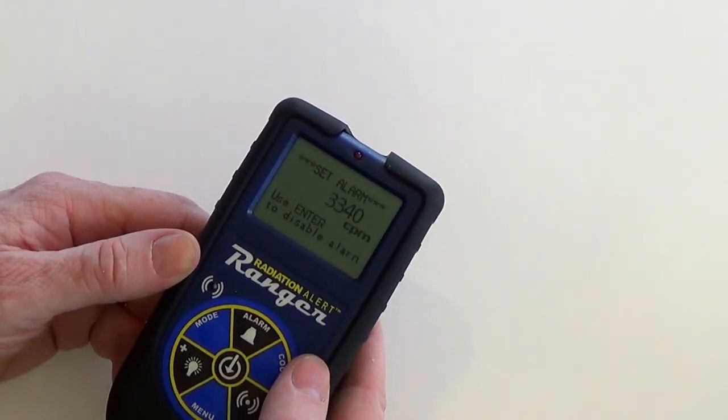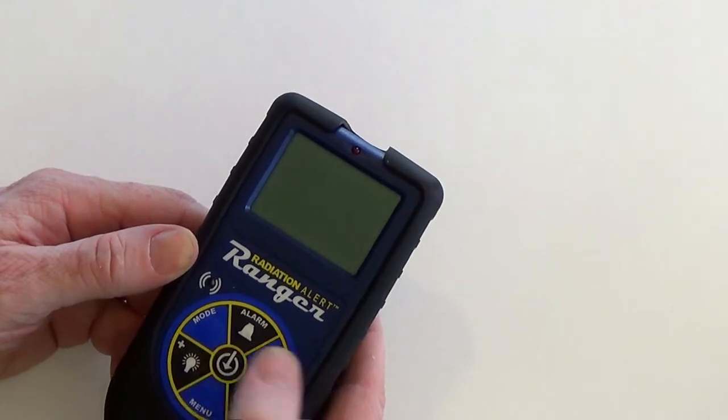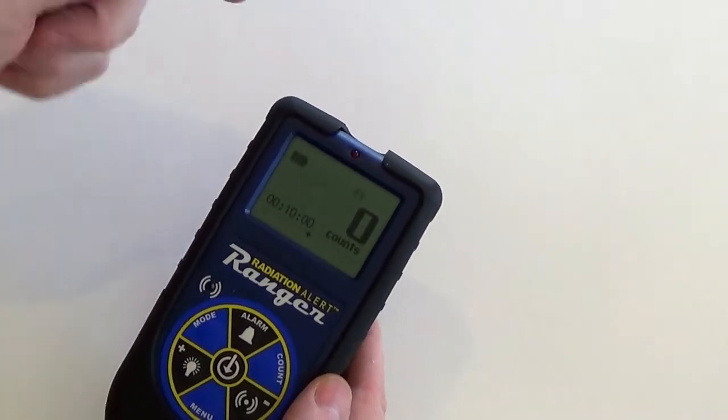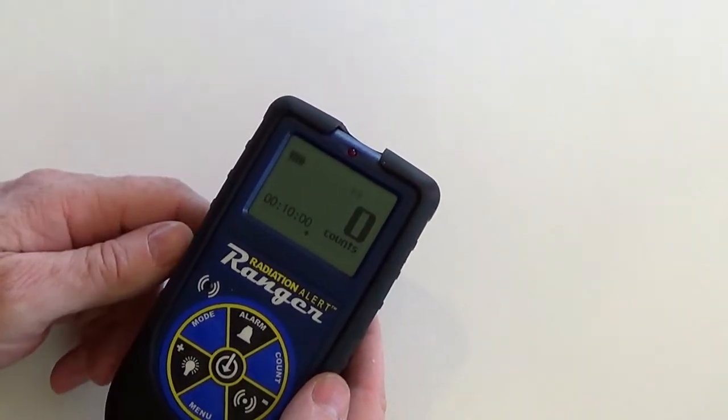To deactivate the alarm, press the alarm button again and follow the on-screen prompts. Press enter to disable the alarm, and you'll notice that the alarm icon has now disappeared.